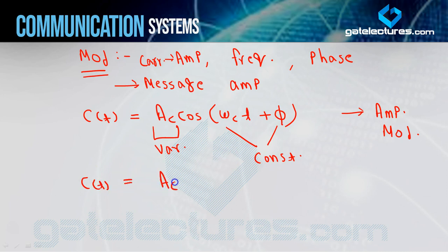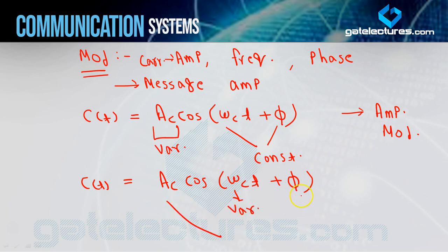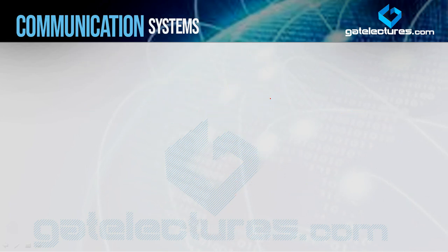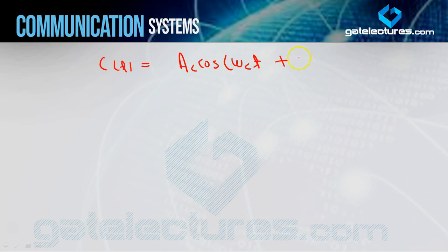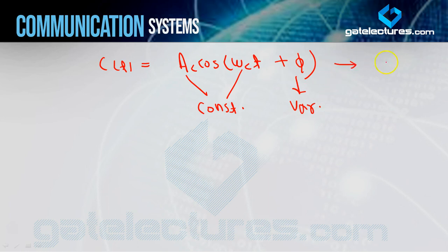If the frequency varies because of message signal amplitude variation, we call it frequency modulation. And if c(t) = AC cos(ωC t + φ), where AC and ωC are both constant and φ is the variable due to message signal amplitude variation, then we call it phase modulation. So these are amplitude modulation, frequency modulation, and phase modulation.